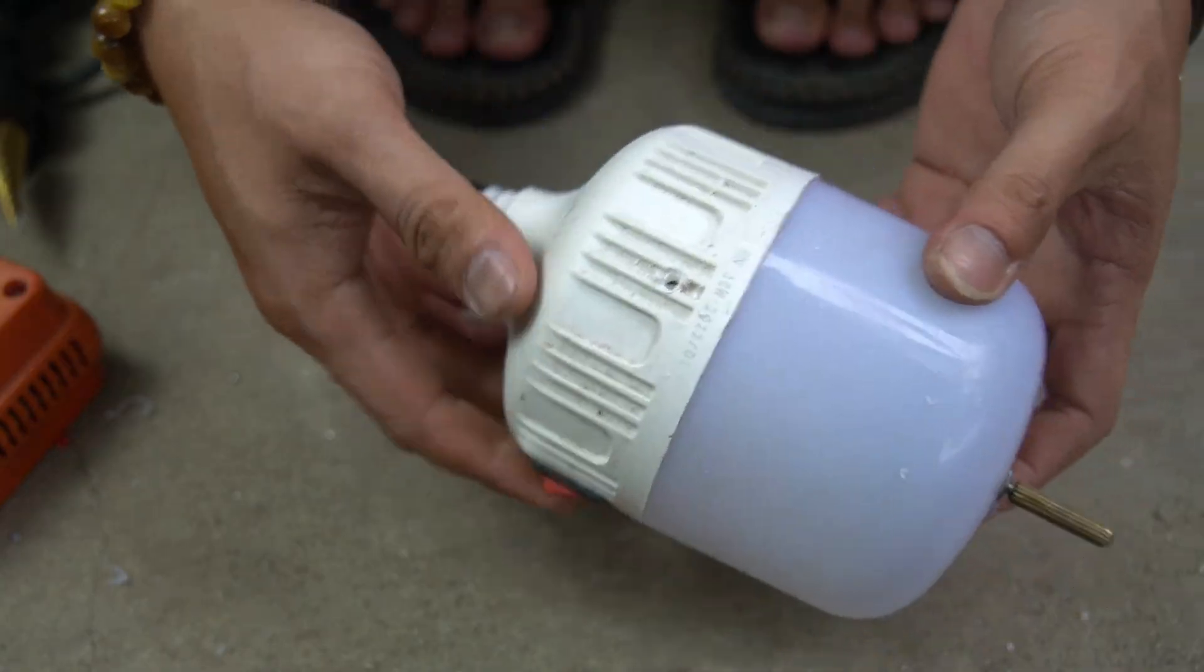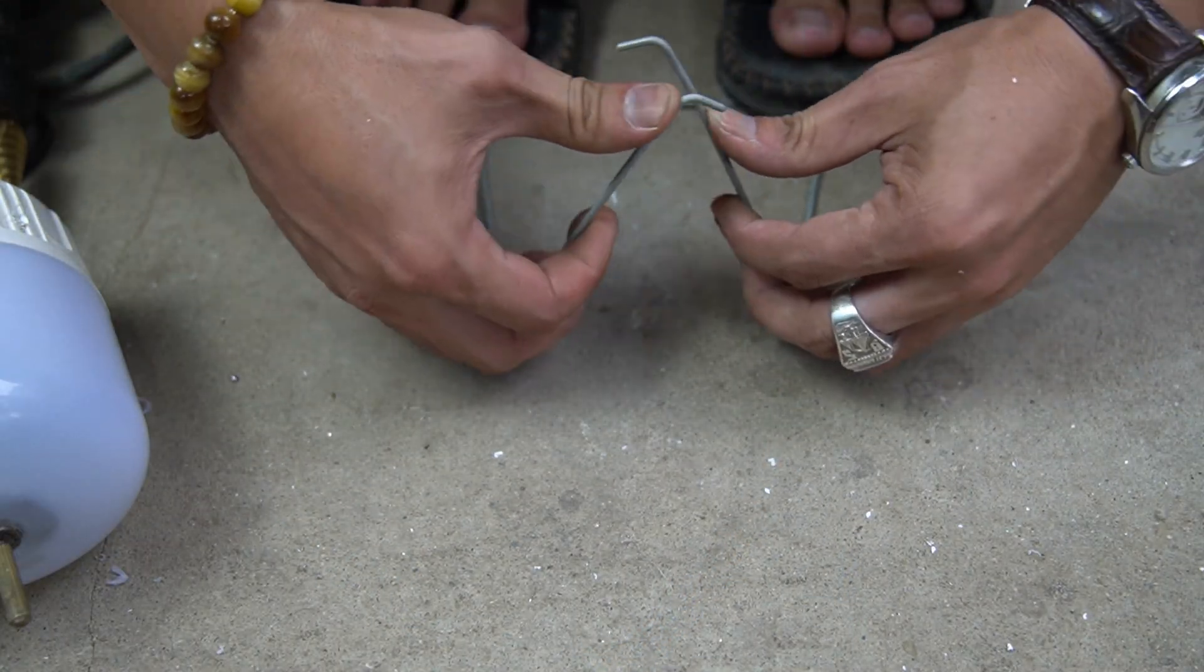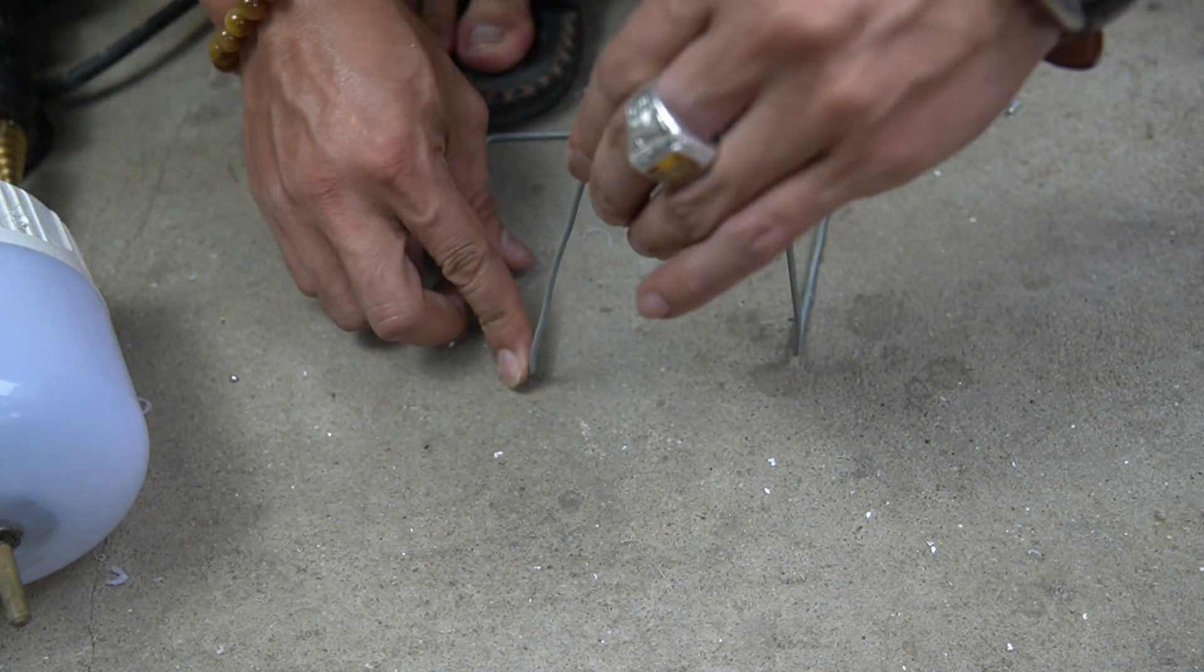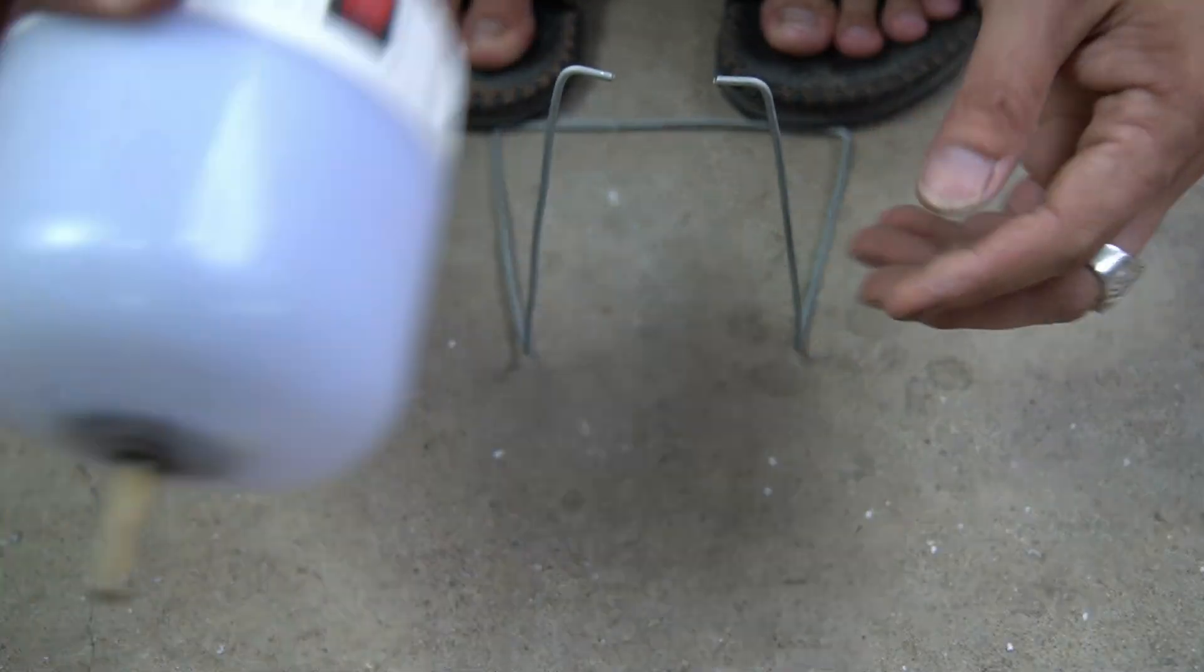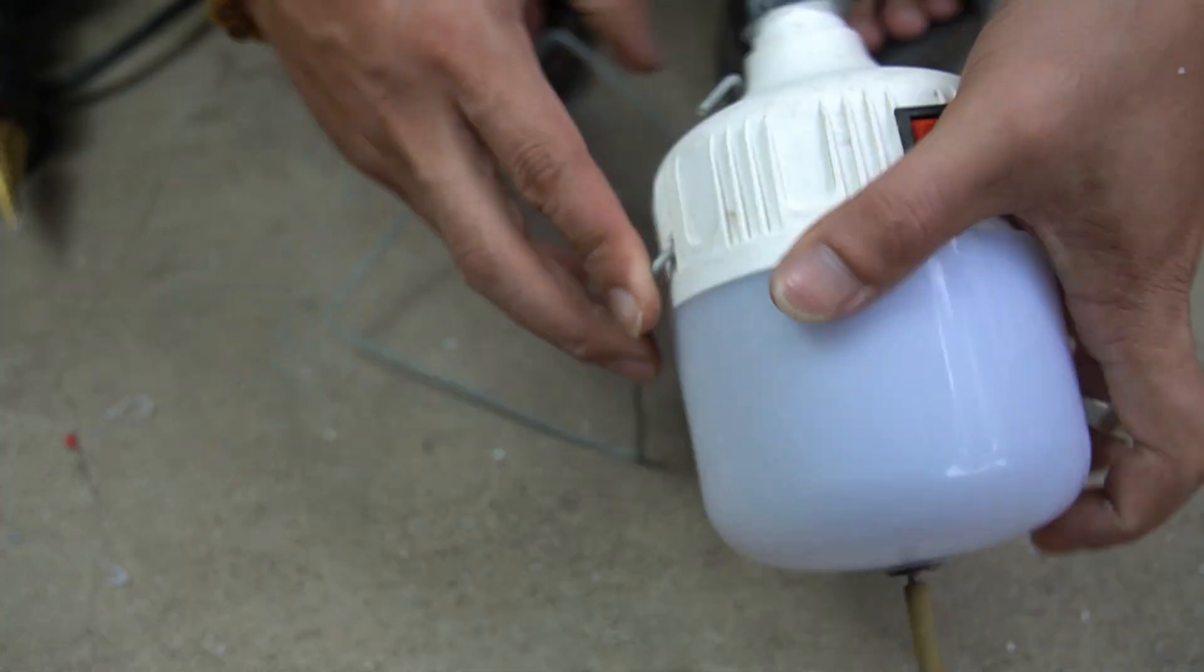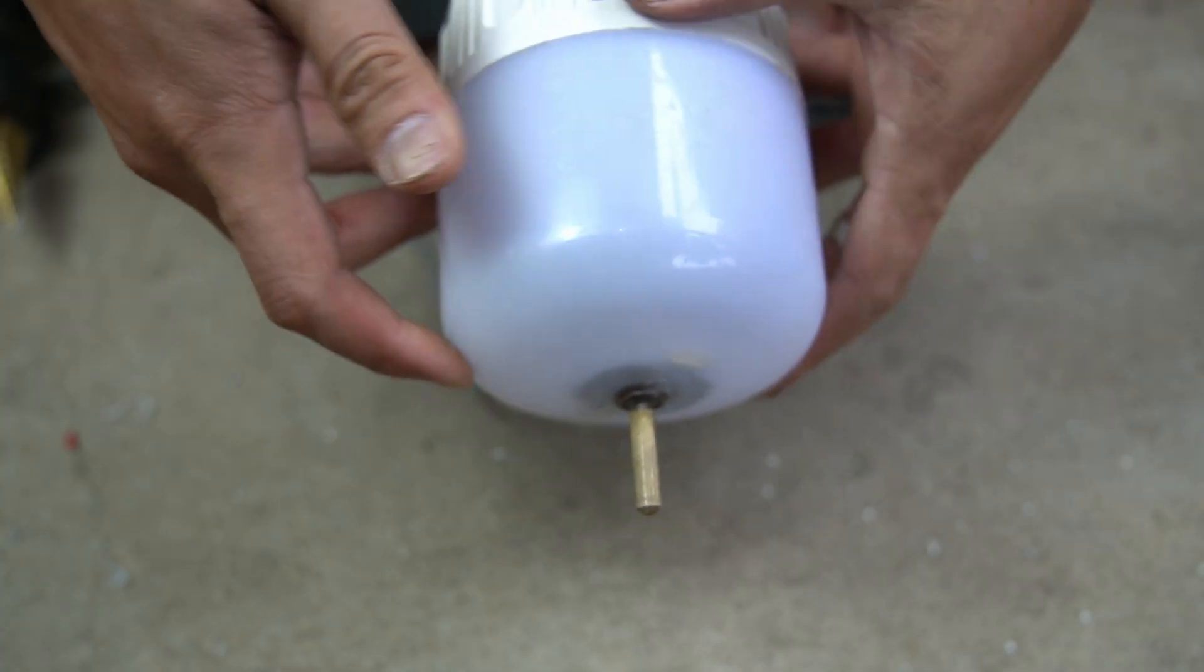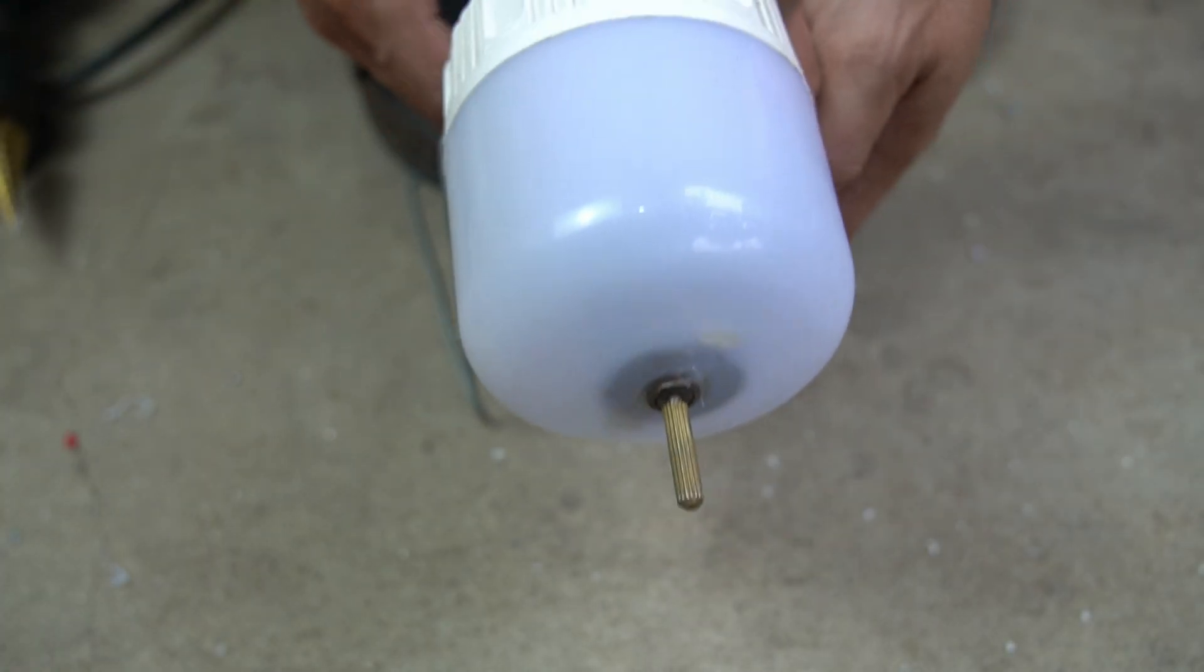I will make the fan a base. I make two small holes on the bulb cover. Next, I used a small steel frame and bent it into a sturdy base, then inserted it into the two holes I made in the bulb shell.